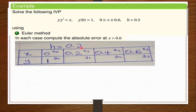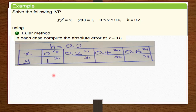We know our step length to be 0.2. We add 0.2 to 0 to get 0.2, add 0.2 to get 0.4, add again to get 0.6, and we end there because the interval for x goes from 0 to 0.6. We've also been told that the initial value for y is 1, so y₀ equals 1. Now with the Euler method, we have y1, y2, and y3 values missing, so our job is to find these values.